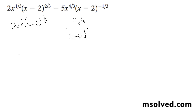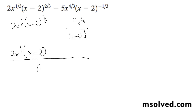Alright, getting common denominators, I'm going to get 2x raised to the 1/3rd, and this becomes x minus 2 because it's over the x minus 2 to the 1/3rd. And then I get minus 5x raised to the 4/3rds.